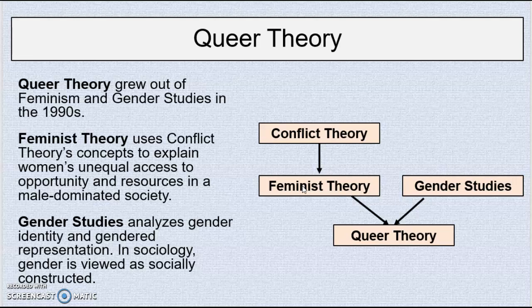Gender studies, on the other hand, rather than looking at assigned sex as the basis for inequality, looks at gender identity and gender representation, or gendered representation. In sociology, it's recognized that gender is something that is socially constructed — the idea that we expect certain types of dress, manners of speech, gestures, behaviors, careers, and interests to be associated with one sex or another is an expectation based on what we think is appropriate behavior associated with that sex. And that is the definition of gender.